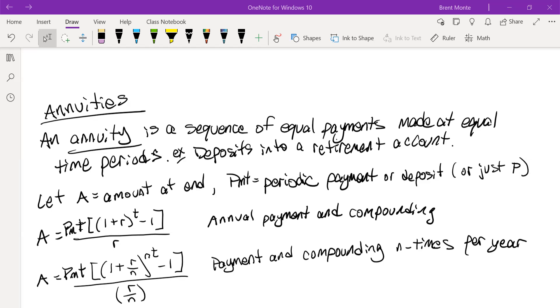We'll talk about how we plug these into our calculator and how they work. So this first formula you see, the A is just for annual payment and compounding. If we have periodic compounding N times a year, then we have a slightly different formula.